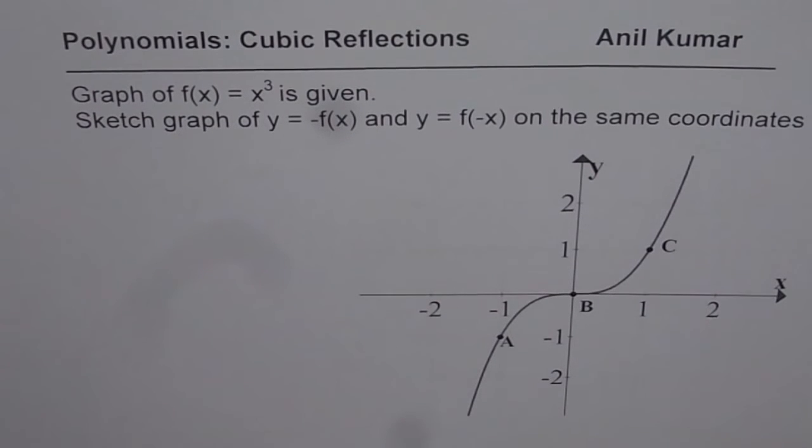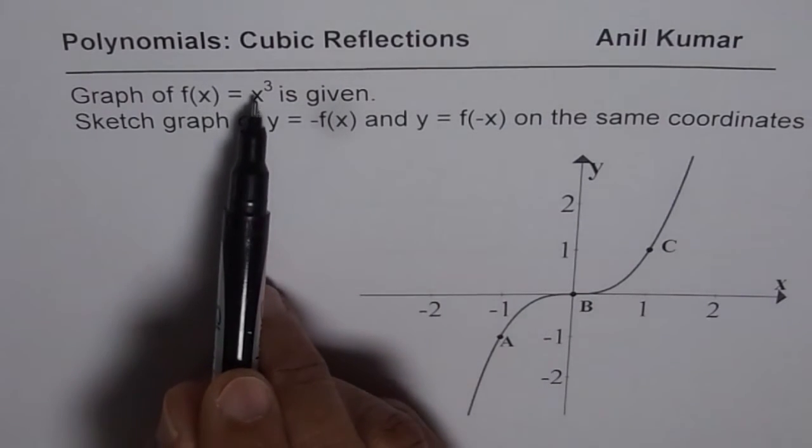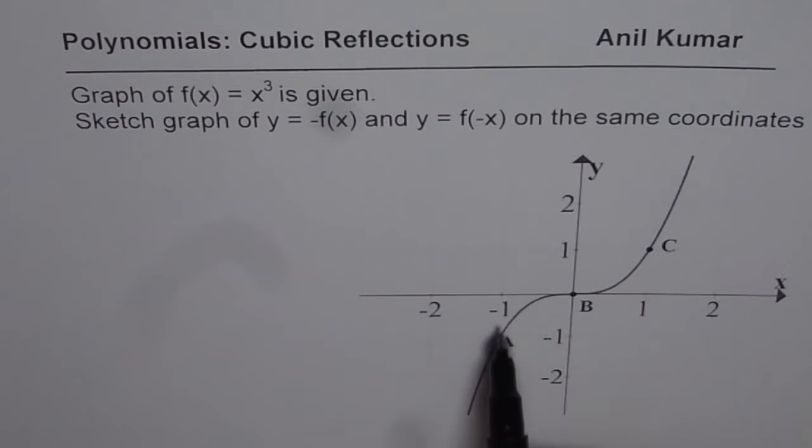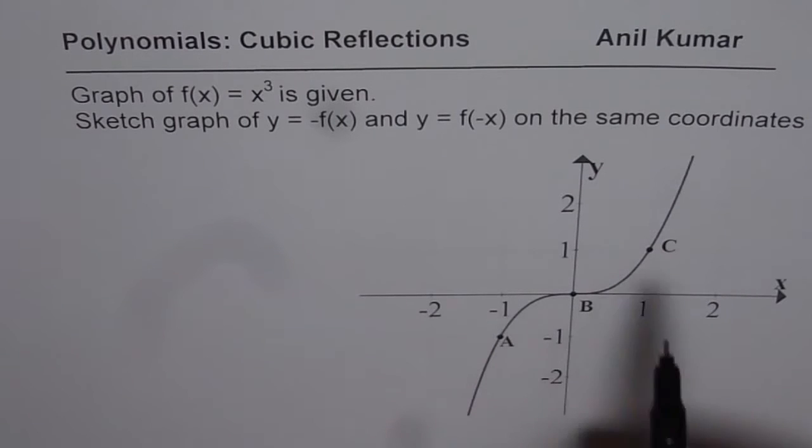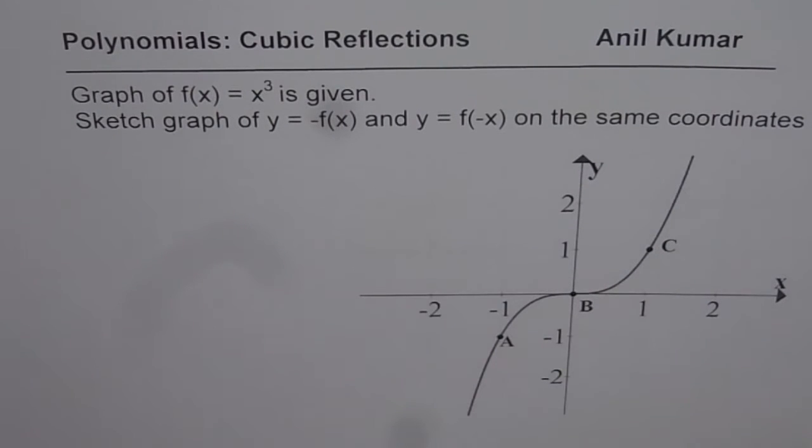Question here is, graph of f(x) = x³ is given and that is the graph. At 0 it goes through the origin. And the points minus 1, minus 1 and at 1, 1³ is 1. So that is the graph of a cubic function.